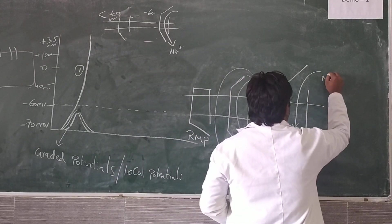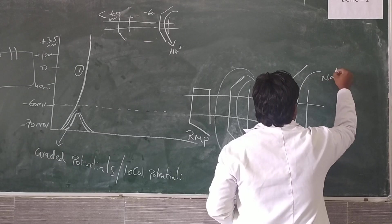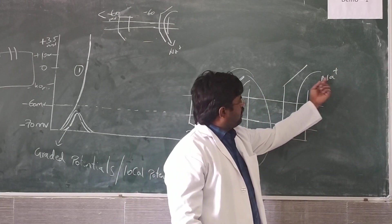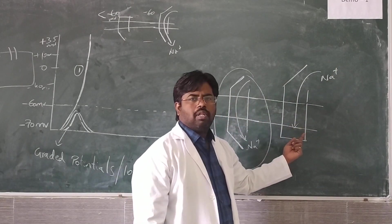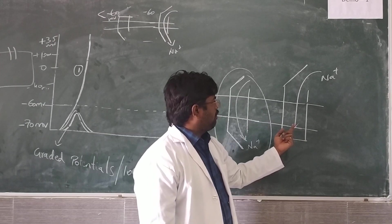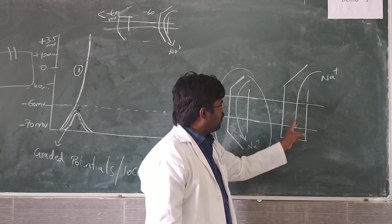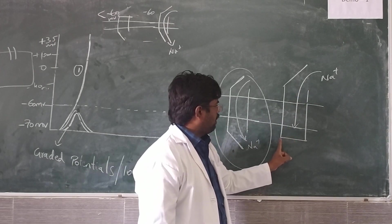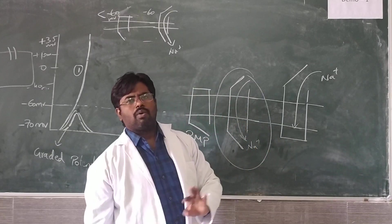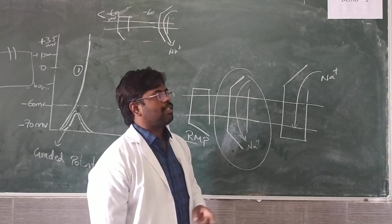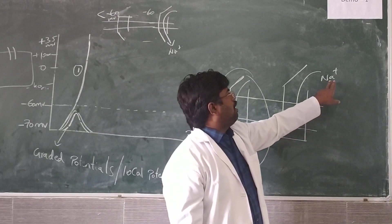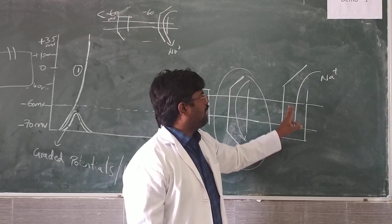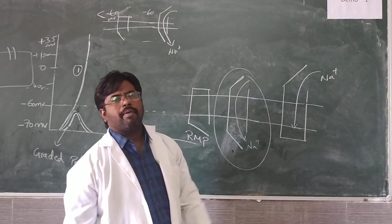A lot of sodium ions are available outside the cell membrane, entry is also possible, but proper transport is not possible because the inactive gates are closed. By this, a lot of sodium ions will be trapped inside the cell membrane.